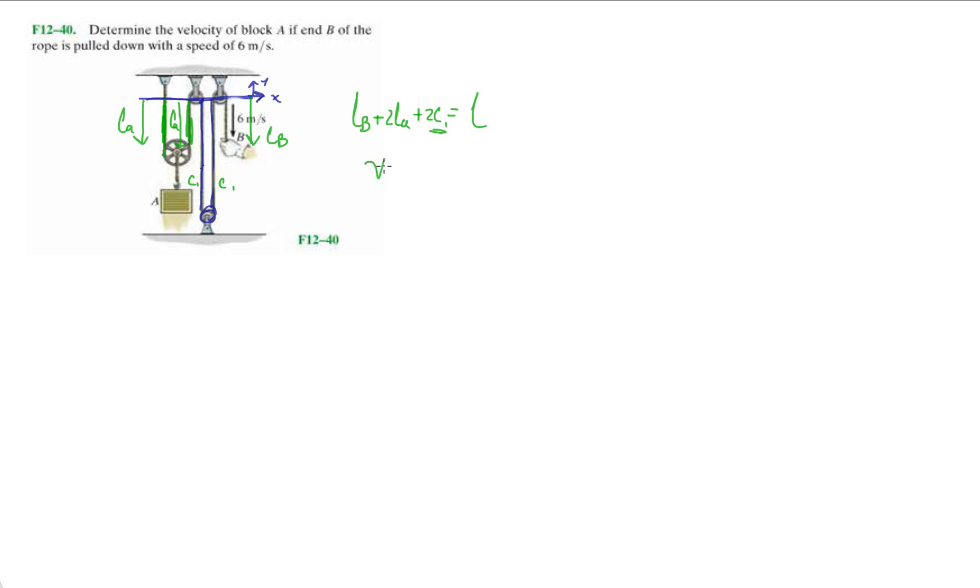So when we take one derivative, one time derivative, we're going to get VB plus two VA. Derivative of constant is zero, so this goes away. The total length of the string is constant, so again, derivative of constant is zero. So we're going to get this equation over here.